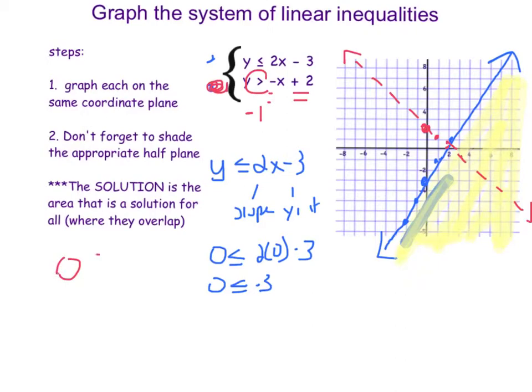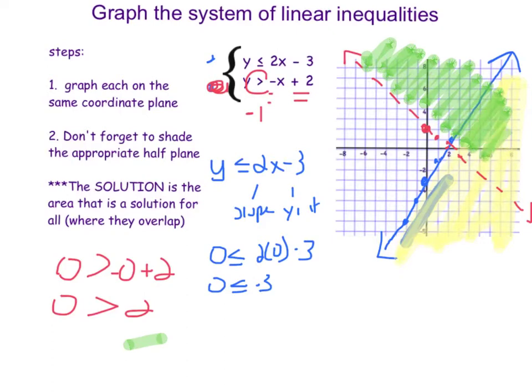0 is greater than negative 0 plus 2. 0 is greater than 2. Does not make a true statement. So I know that the half plane that includes 0, 0 is not the solution. So it's going to be the other side. So I'm going to shade all of the sides.